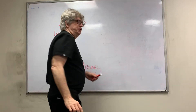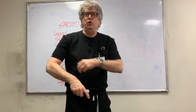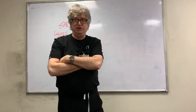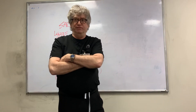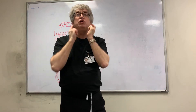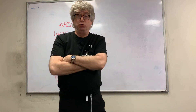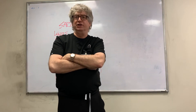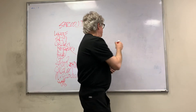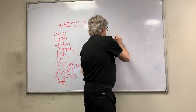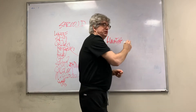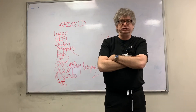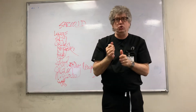Sarcoid could involve the cranial nerves — the most common is cranial nerve 7. It could also involve the eyes, causing uveitis, and the parotid glands. A swollen parotid gland should make you think of sarcoid. There's a condition called Heerfordt syndrome, which involves uveitis, parotitis, and cranial nerve involvement — that's also associated with sarcoid.